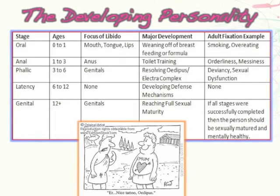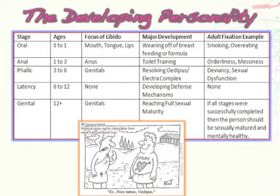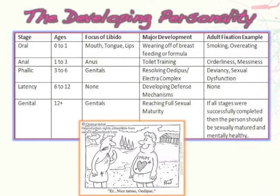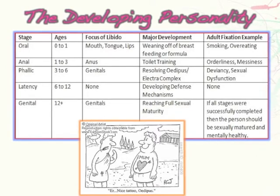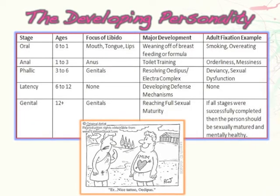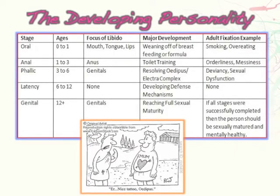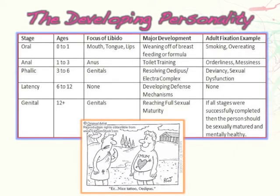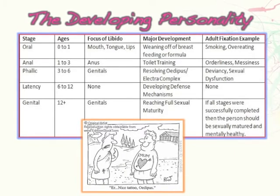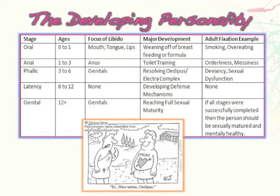The first stage is the oral stage, lasting from zero to one years old. In the child's unconscious mind, what arouses the child — the focus of libido — is their mouth, tongue, and lips. Before going further: it's important to note that a child's conception of sex is not at all like an adult's. We start getting sexual hormones released in the body in the 12th week in the womb, so our body is wired to have certain sexual responses.